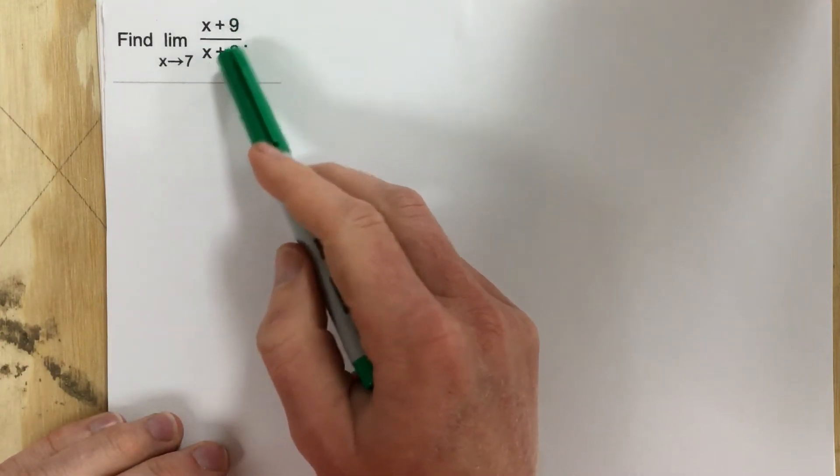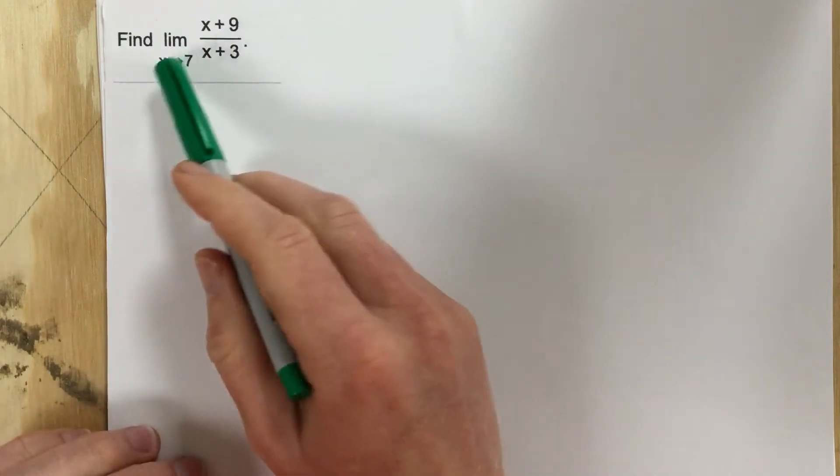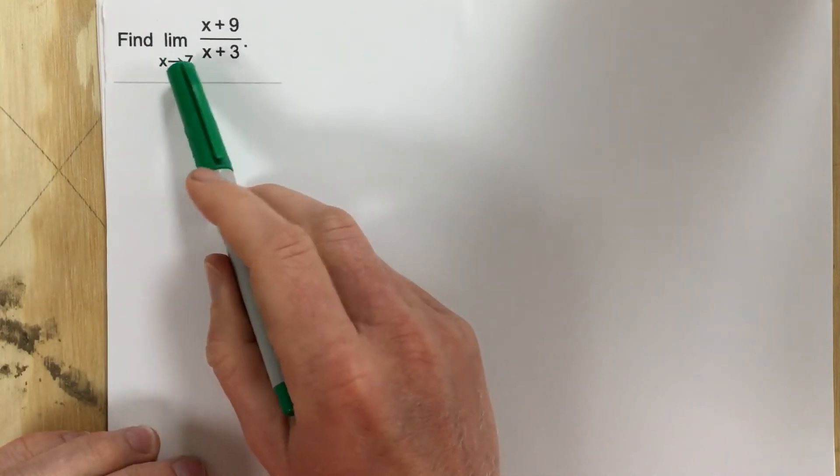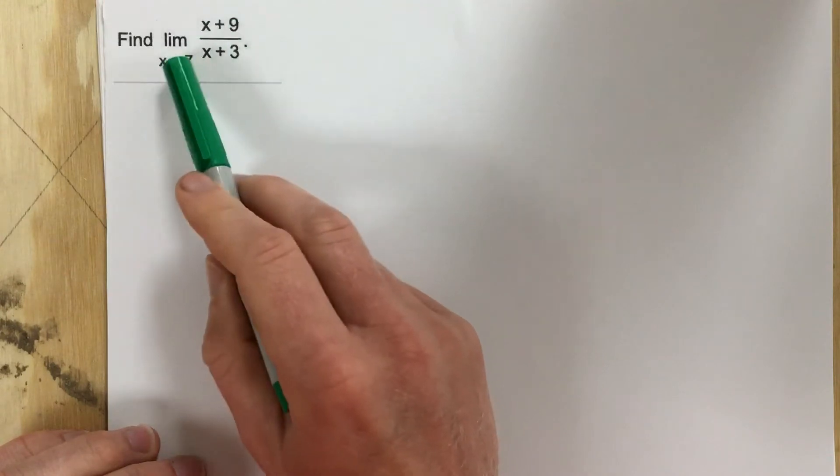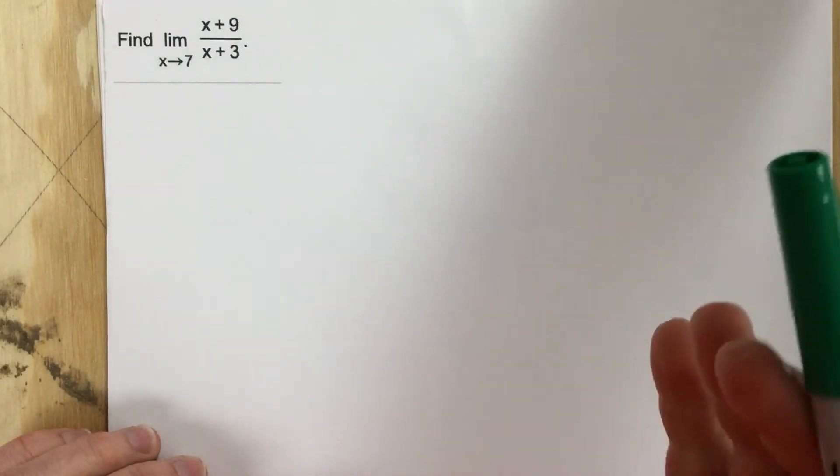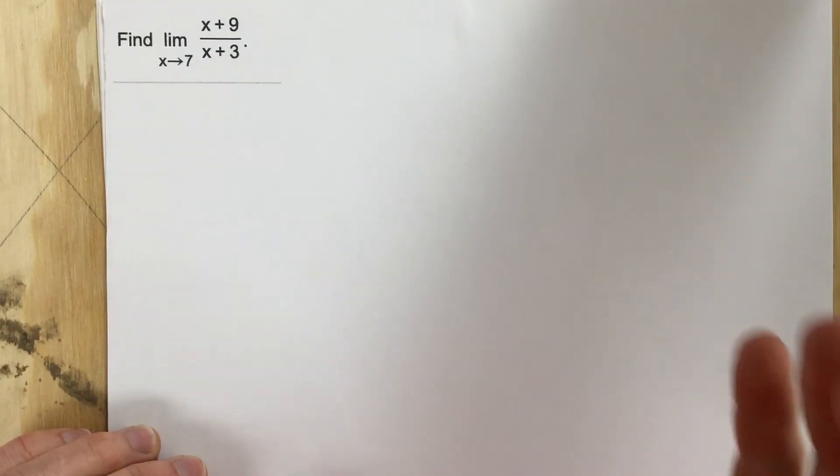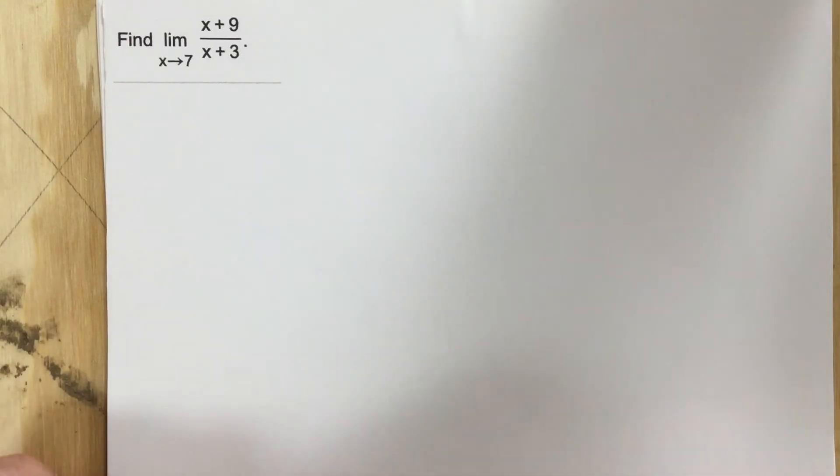Let's say your function is defined at the x value of 7. If your function is defined at the x value of 7, then of course the limit there is going to be whatever the output value is. So one thing to do is you always want to check to see if the function is actually defined there.